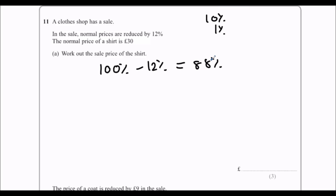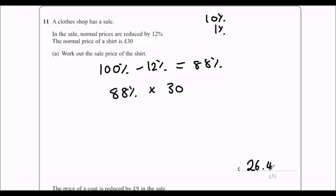But we do have a calculator. So this is 88%. I want 88% of 30. So on a calculator, you can just do 88% times 30, and that will tell you the answer. So 88% times 30, and that's 26.4. So £26.40.